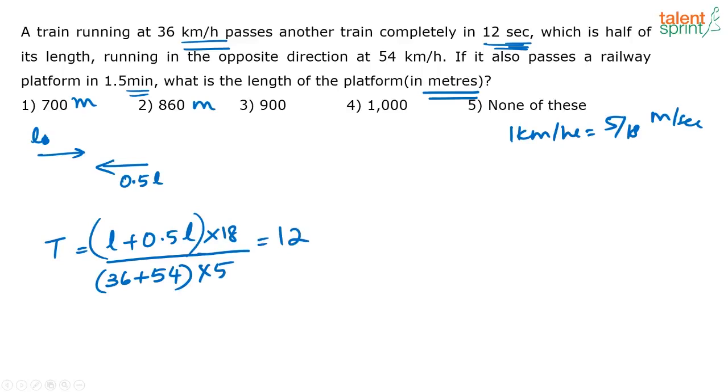Because they are saying that for the two trains to cross each other, it will take 12 seconds. So, you can just directly do here, 36 plus 54 is 90 km per hour. This is 90 km per hour into 5 by 18. That is you will get it as 25. So actually this when you cancel this, this will be 25, or you can solve this and get L, that is 1.5 L or 3 by 2 L. That is equal to 25 into 12, or L is equal to 200. So you know that the length of the train is 200 meters.